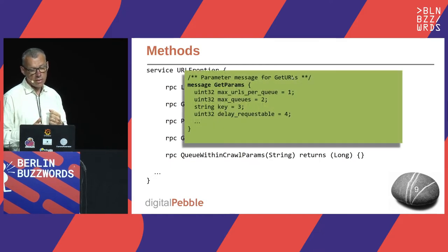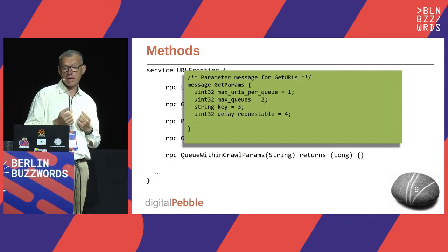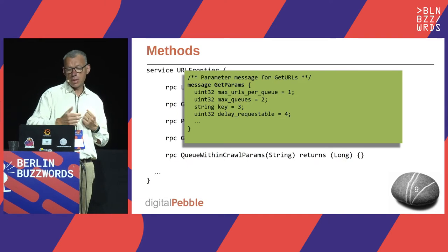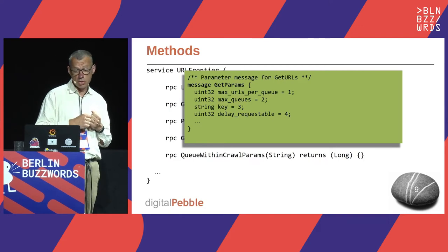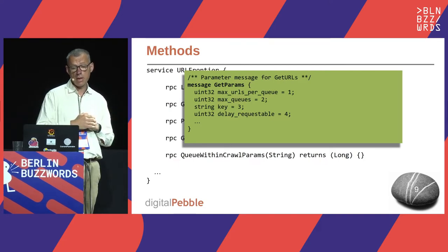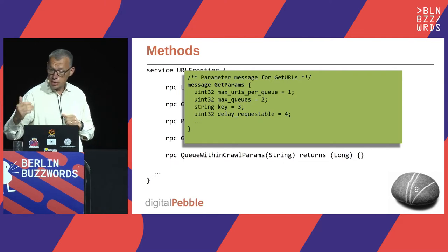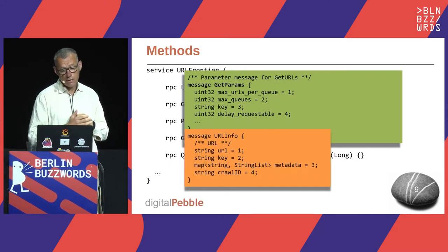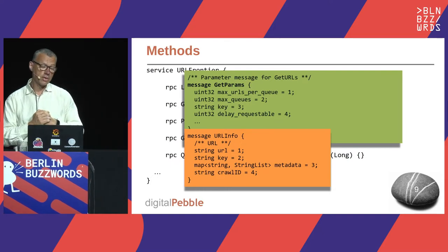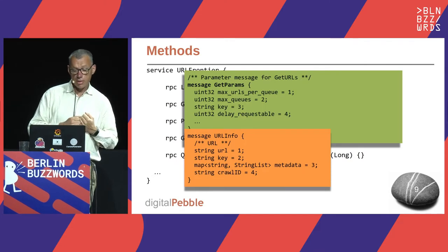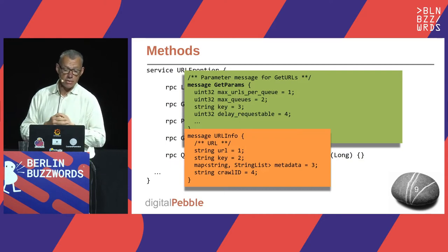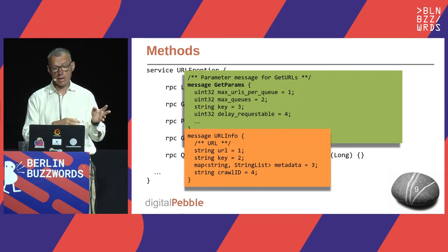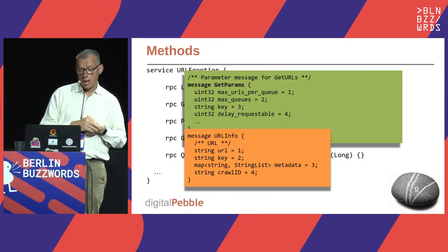Looking at getURLs more closely: the message sent by the crawler can define a maximum number of URLs per queue to retrieve, a maximum number of queues to query in one go, and you can query for a particular queue by key. What you get in return is a stream of messages containing the URL to be fetched, the queue key it came from, and arbitrary metadata — typically information the crawler has found about a URL that you can store in the frontier.